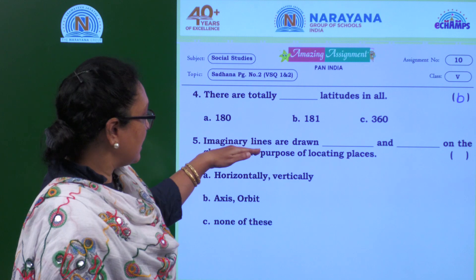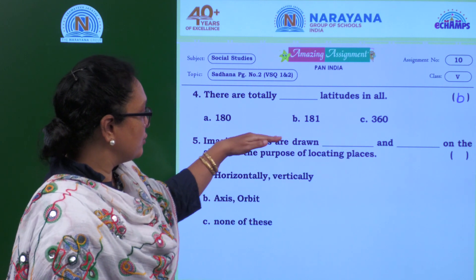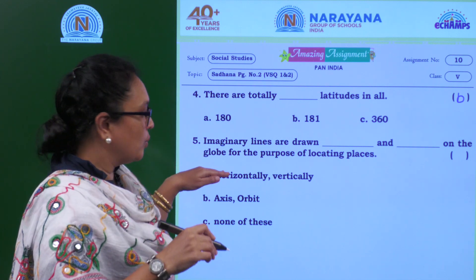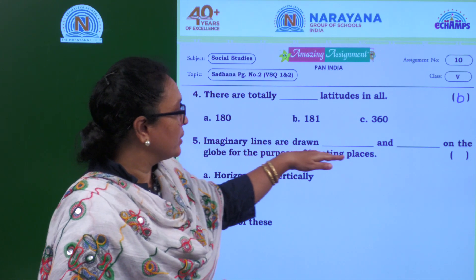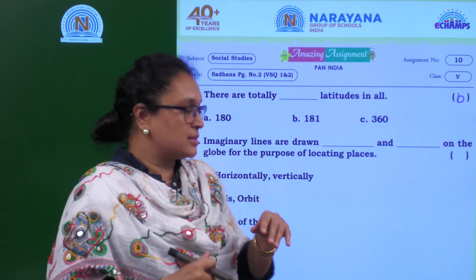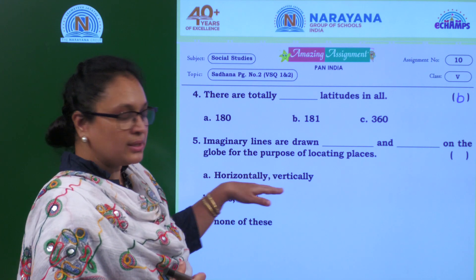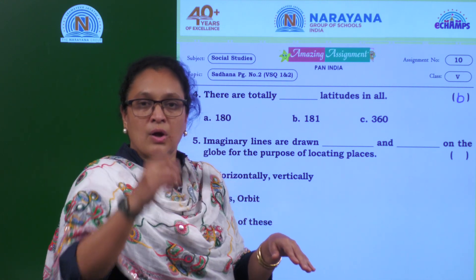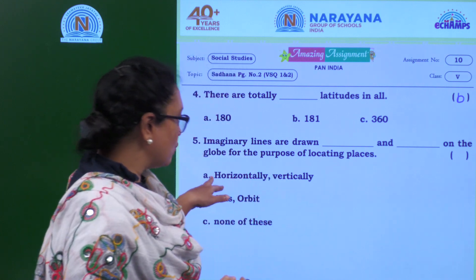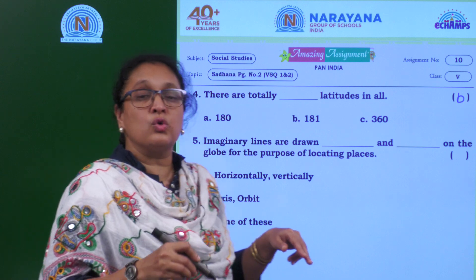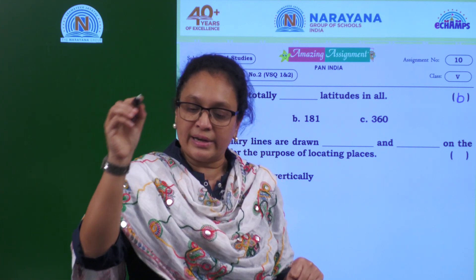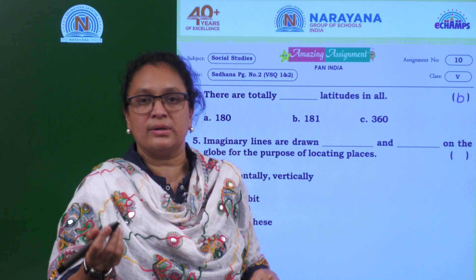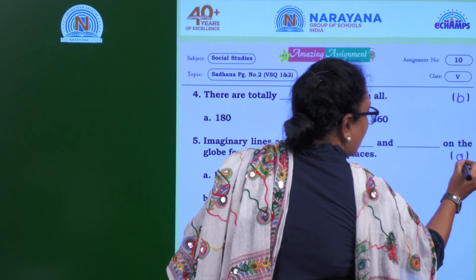The last one: imaginary lines are drawn in what manner on the globe? They are drawn for the purpose of locating places. The options are horizontally or vertically, axis, orbit, or none of these. Imaginary lines are drawn both vertically and horizontally, so the answer is A — horizontally and vertically. We can identify any place around the world using latitudes and longitudes.